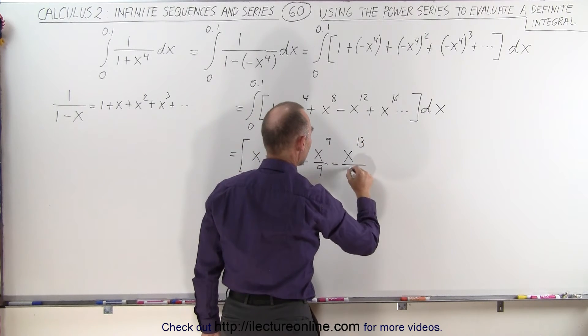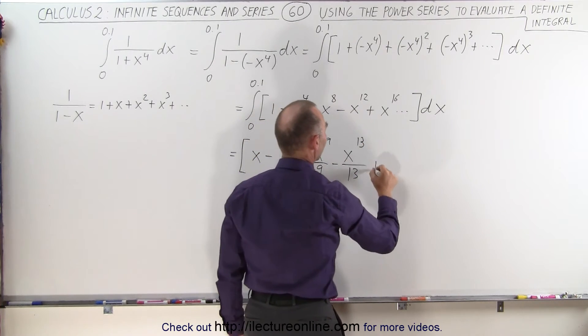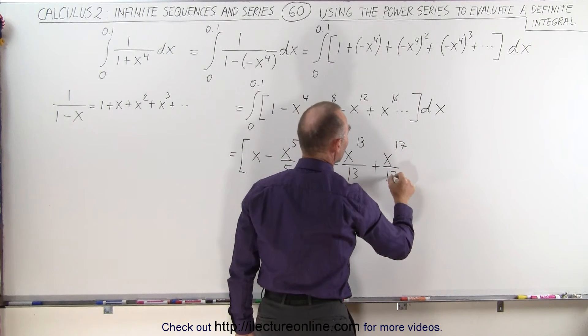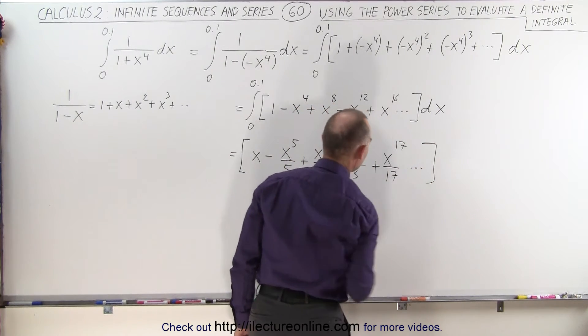That's a terrible looking 3, over 13, plus x to the seventeenth over 17. And you get the idea here.